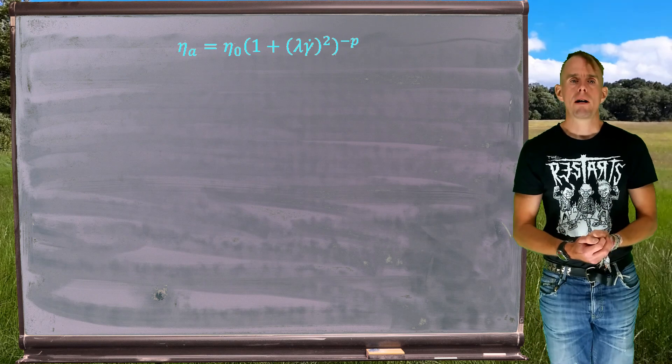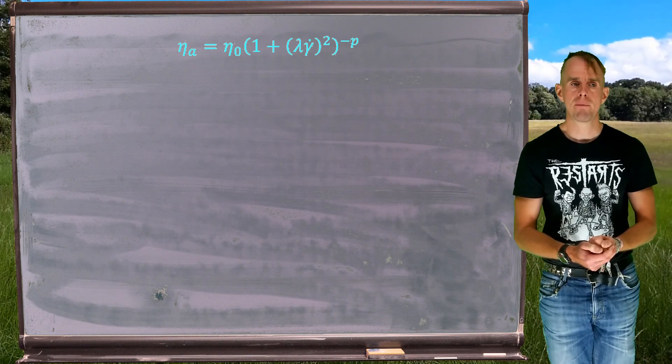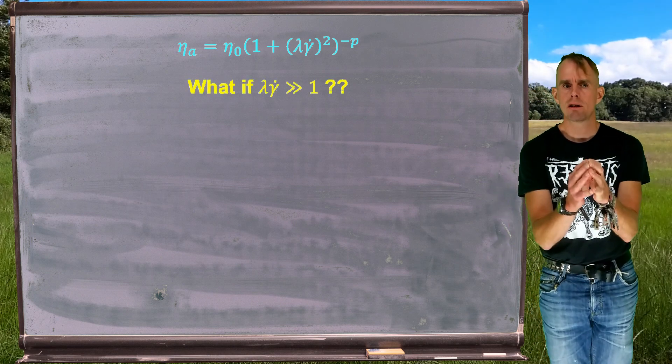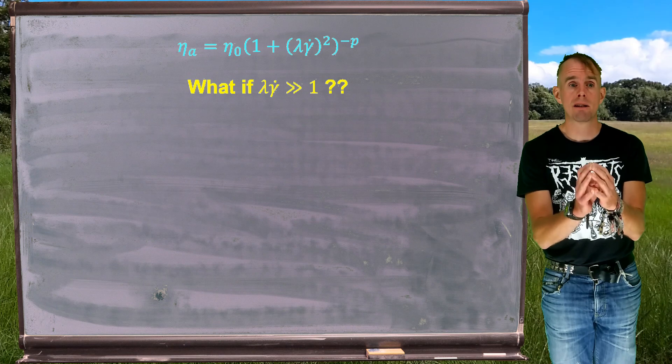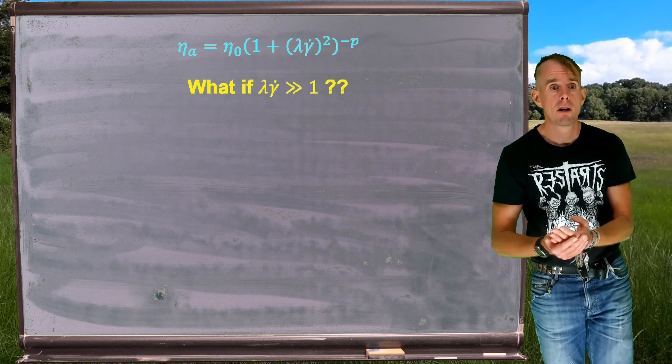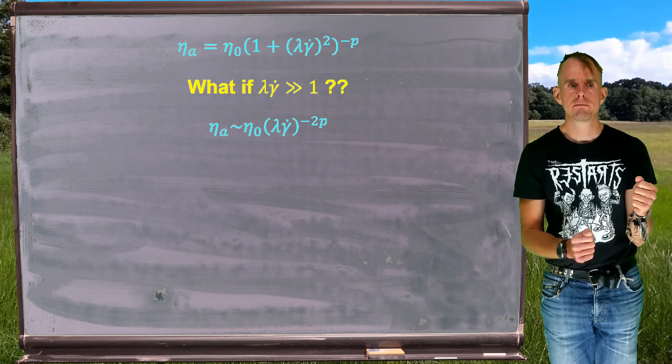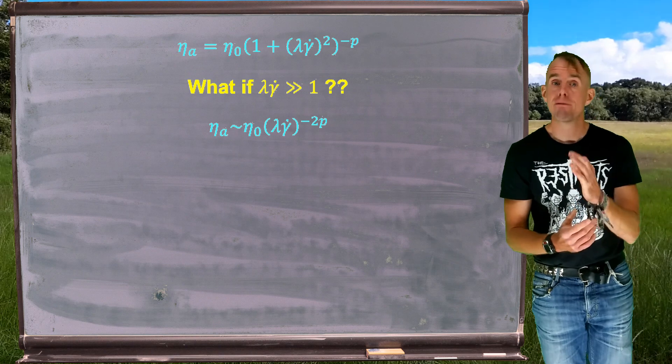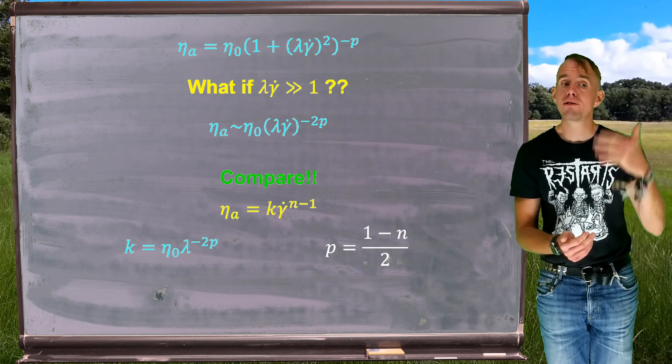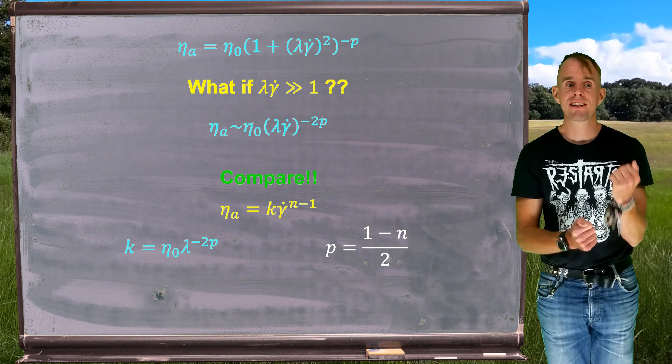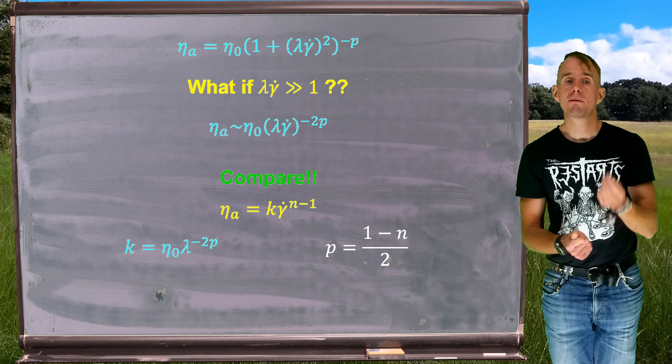So, let's have a look now at how we can start to think about interrelating the Carreau equation with the power law equation. I've put the Carreau equation back on the blackboard for you, as a reminder. Now, what happens if the product of lambda gamma dot is far greater than one? That means that that product will dominate the bracket, which involves one plus lambda gamma dot squared. Which means that we can say, well, if that's the case, our apparent viscosity is roughly equal to eta zero. The product of lambda gamma dot raised to minus 2p. Very useful, because we can compare it directly now to the power law fluid, which I've put again on the blackboard for you. If we can compare those two, we see that our power law consistency index k is going to go with eta zero lambda to the minus 2p. And p is going to be equal to 1 minus n over 2.